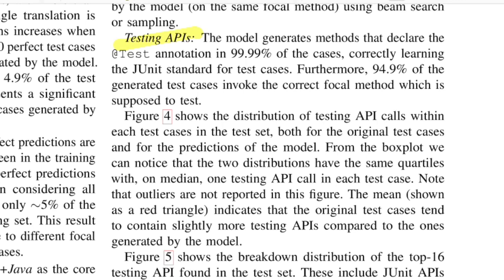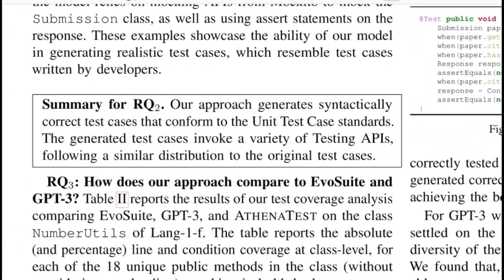They also tested API usage: since dataset heuristics required the '@Test' annotation before method names, they verified the model replicated this — and found 99.99% compliance. Furthermore, 94.9% of the time the test cases correctly targeted the intended focal method, meaning the model was generating very little false or irrelevant information. The RQ2 summary: the approach generated syntactically correct test cases conforming to JUnit standards, testing a variety of APIs.